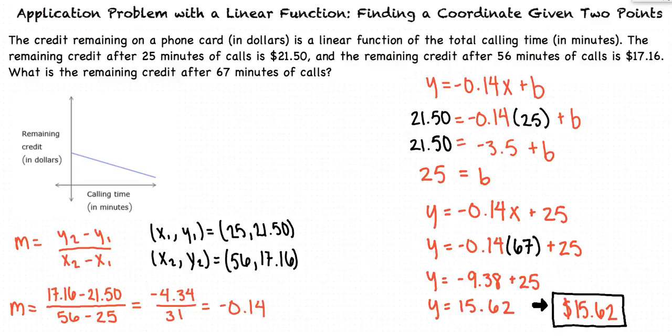So when completing these types of application problems, we first find the equation of the line that represents our situation. We can do this by using the two given points to find the slope and y-intercept. We then plug in the variable we are given to solve for the variable we don't know.